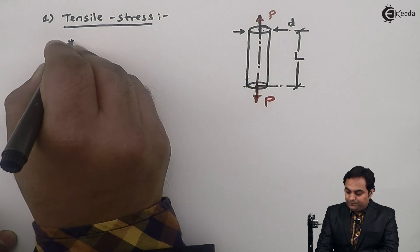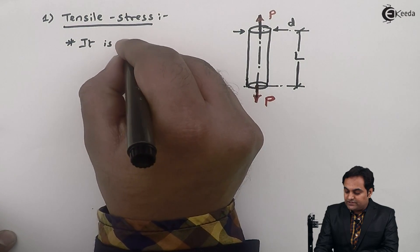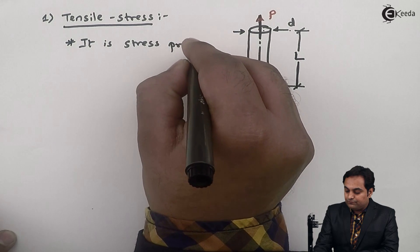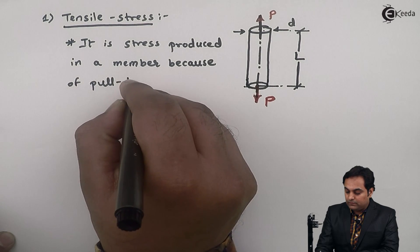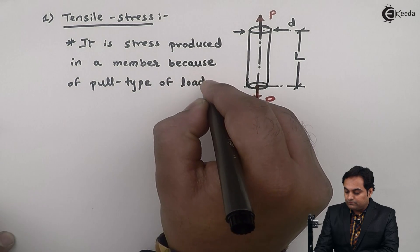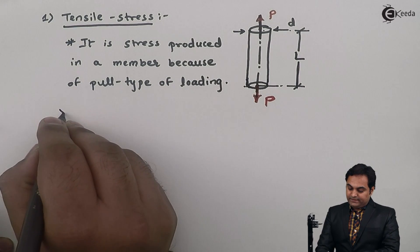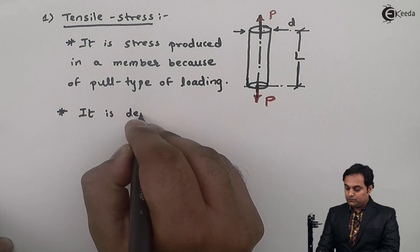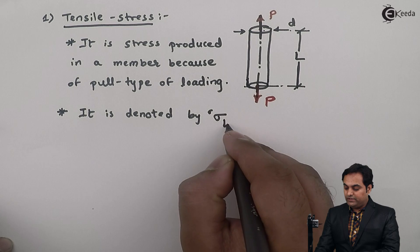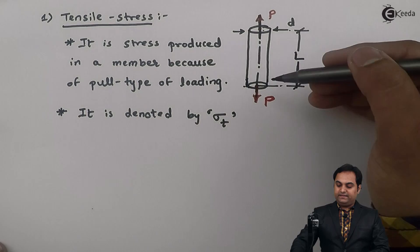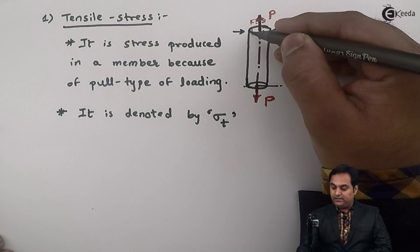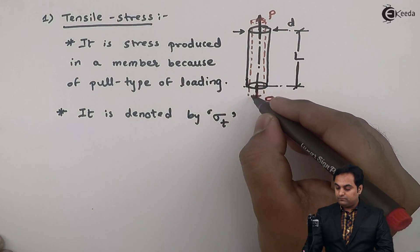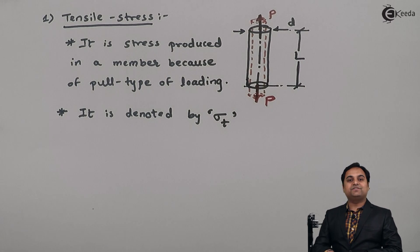The stress which is developed in the material is called tensile stress. Tensile stress is the stress produced in a member because of pull type of loading. It is denoted by sigma-t, where t is the suffix indicating tensile stress. Tensile stress results in a pulling action, and when there is pulling action the diameter will reduce and the length of the member will go on increasing.